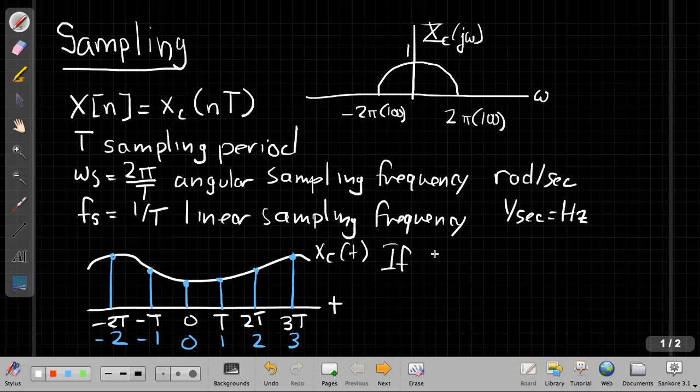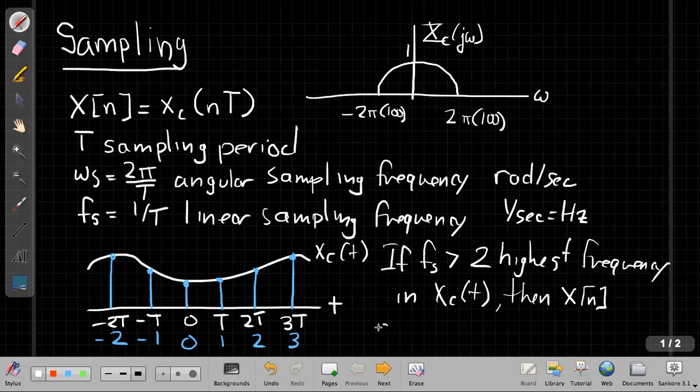So if f_s is greater than 2 times the highest frequency in x_c(t), where both frequencies have to be in hertz, or I can do them both in angular frequencies, then x[n] contains all the information that we need to reconstruct the original continuous time signal. So I can go back and forth.